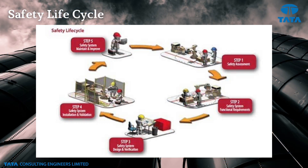The safety life cycle consists of five steps: Step 1 is safety assessment, Step 2 is safety system functional requirement, Step 3 is design and verification, Step 4 is installation and validation, and Step 5 is maintenance and improvement.